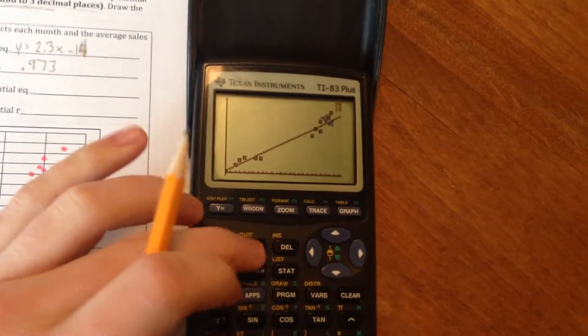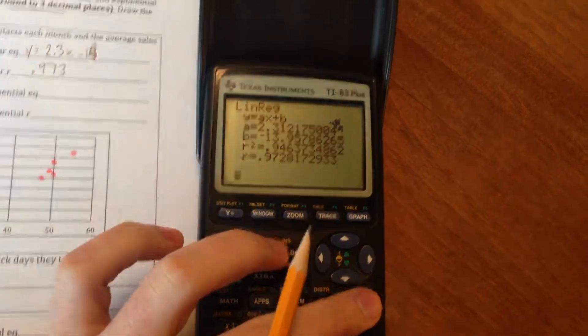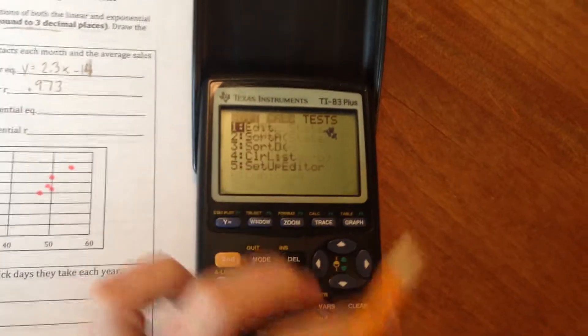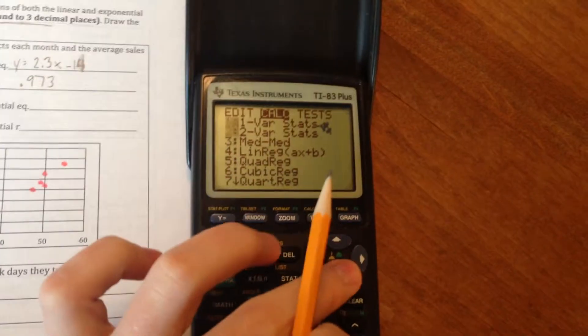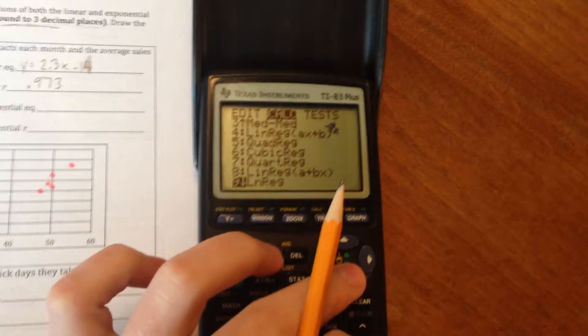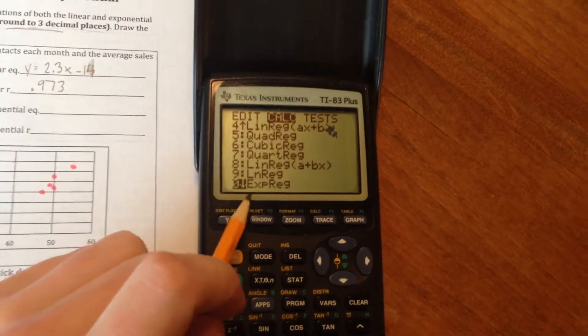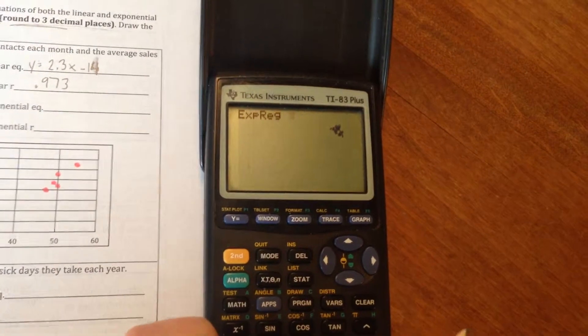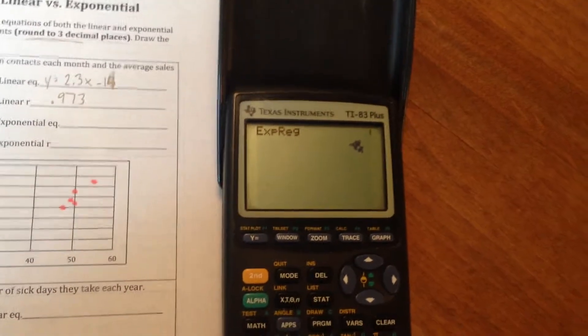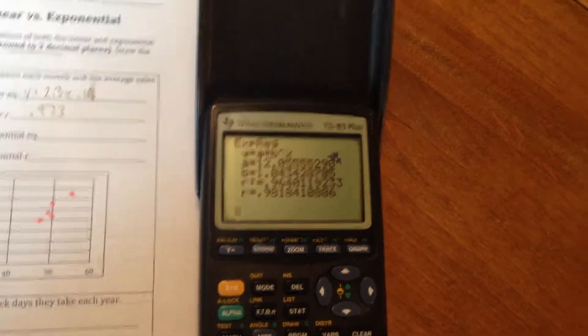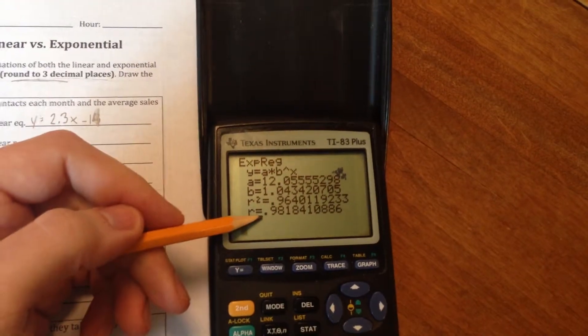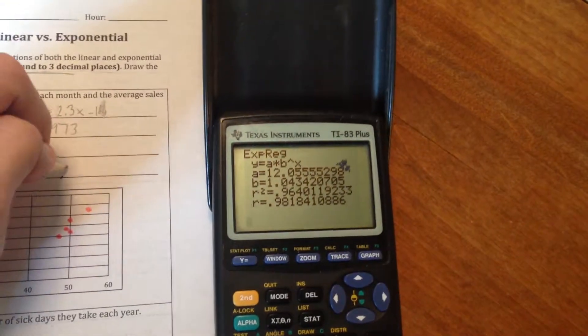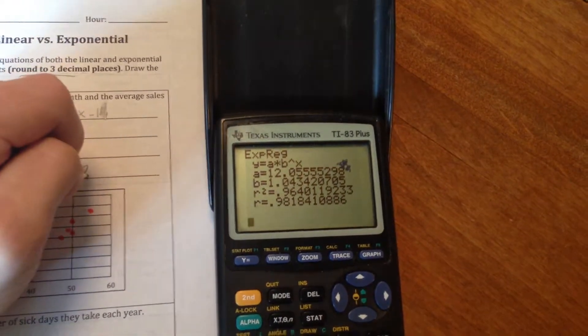Let's go ahead and do the exponential part now. I'm just going to clear that screen just so it looks a little bit cleaner. Again, we're going to push stat, go over to calculate. Down to option 0 this time. Option 0 is going to give us an exponential regression, which is what we're trying to find. So we're going to push enter. Enter again. It's going to think for a little bit. And here, we've got our regression number. So 0.982 this time.